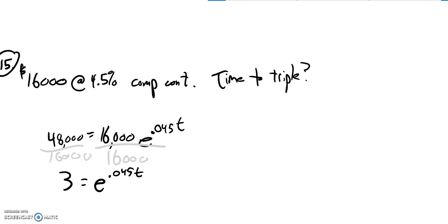0.045 T. Some of you may have just set it up like that from the get-go because you know how long to triple. So I have this E, so I'm going to natural log both sides. Undo that E. So natural log of 3.